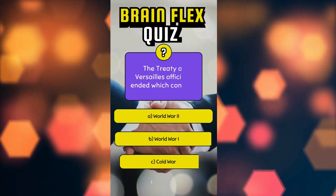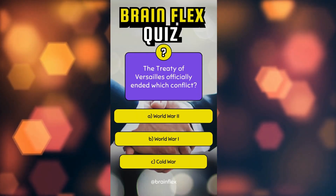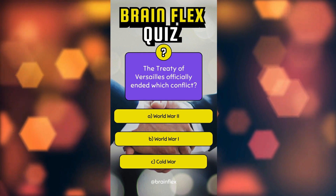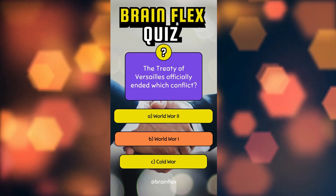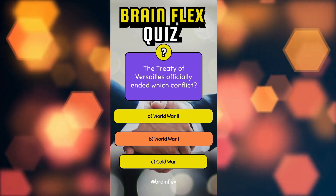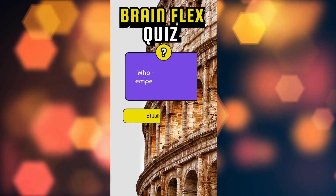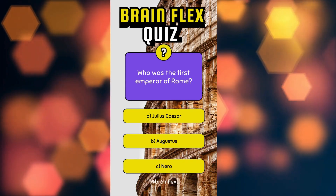The Treaty of Versailles officially ended which conflict? Who was the first emperor of Rome?